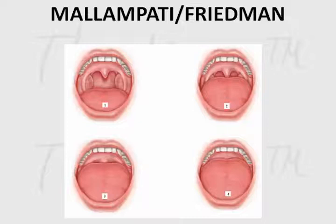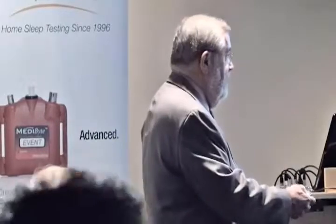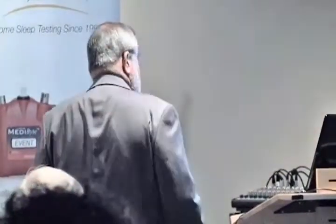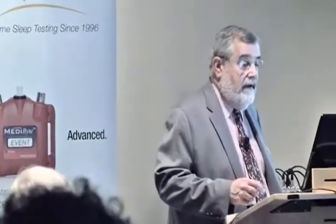With the Friedman scale, you leave the tongue inside the mouth and give a grade of 1, 2, 3, or 4. For a Mallampati, you have the patient stick out their tongue and look. You're looking at a two-dimensional picture of a three-dimensional object — more relevant to whether an anesthesiologist can easily intubate than whether the patient has a breathing problem. But it's still one of the factors to consider.